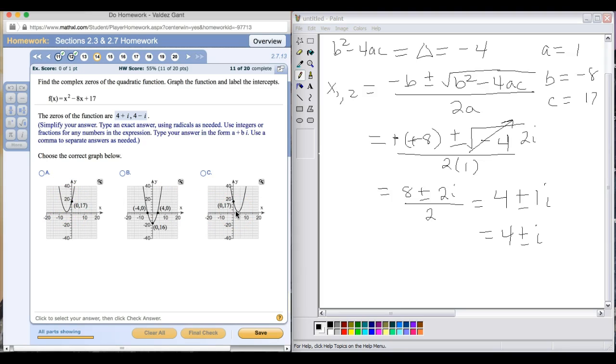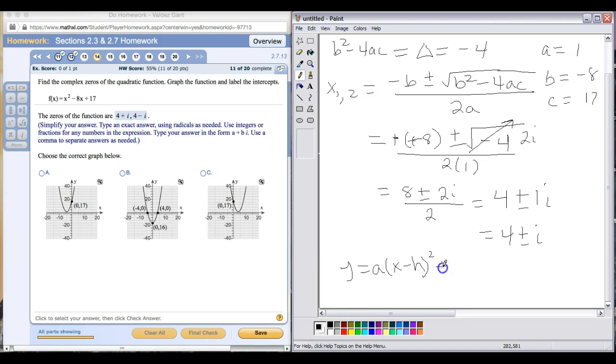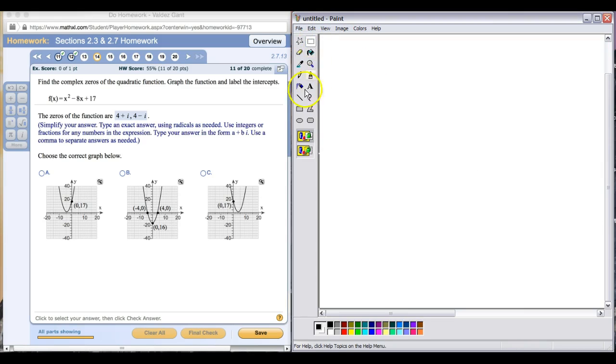A quick way to figure that out is to put this back into the form that looks something like this. In knowing that if we find out what h is, if h is positive, then we know graph C is the answer. If h is negative, then graph A is the answer. We'll clear this out and see which one it is.